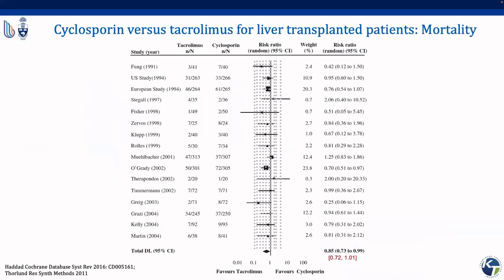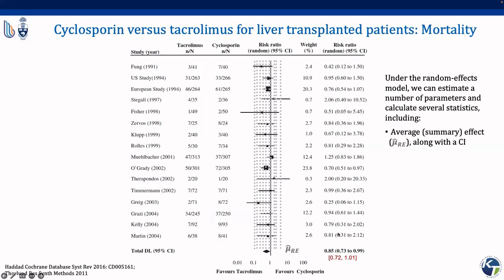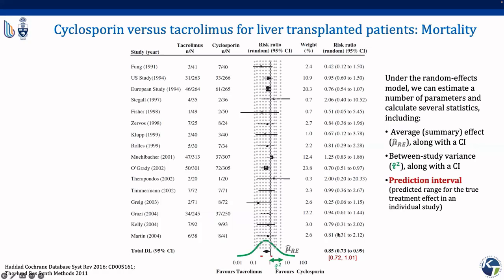Let's see an illustrative example published in the Cochrane Library by Haddad et al., also used as an example in a paper by Thorland et al. published in the Research Synthesis Methods Journal. This is a meta-analysis comparing cyclosporine with tacrolimus for preventing mortality in liver transplant patients, including 16 studies in total. Under the random effects model, we estimate a summary effect size along with its confidence interval, the between-study or heterogeneity variance, and we calculate prediction intervals and several other statistics such as I-squared.